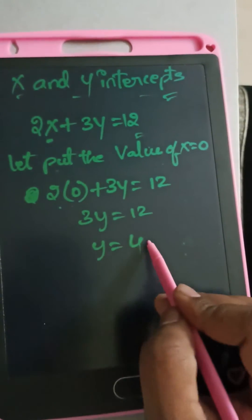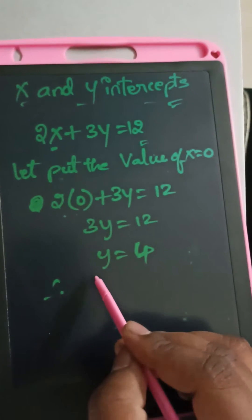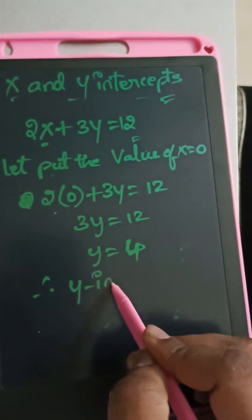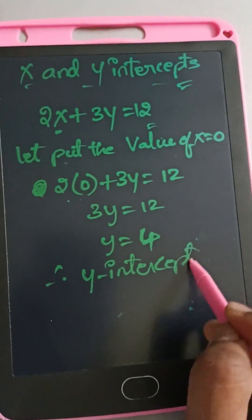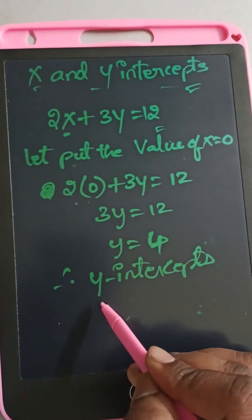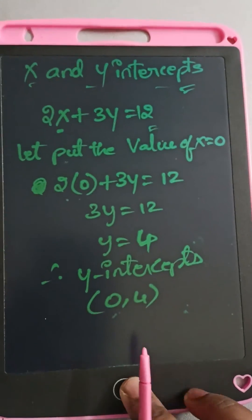Therefore, the y-intercept value is (0, 4). Now we will find out the x-intercept value by putting the value of y equal to 0.